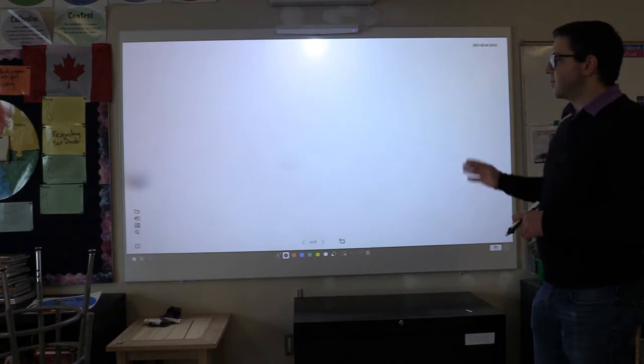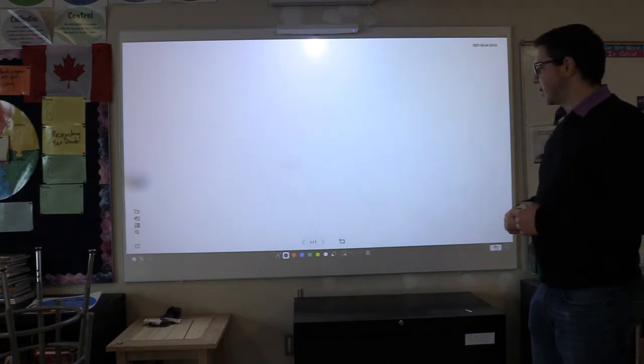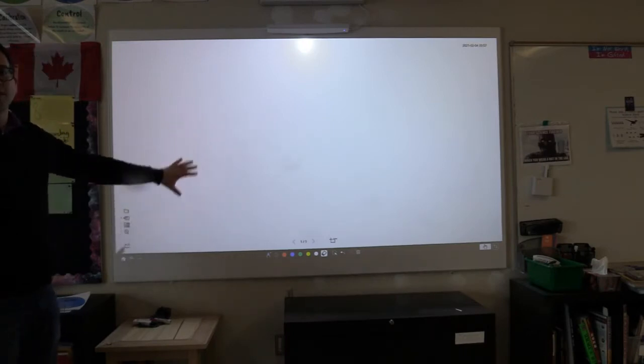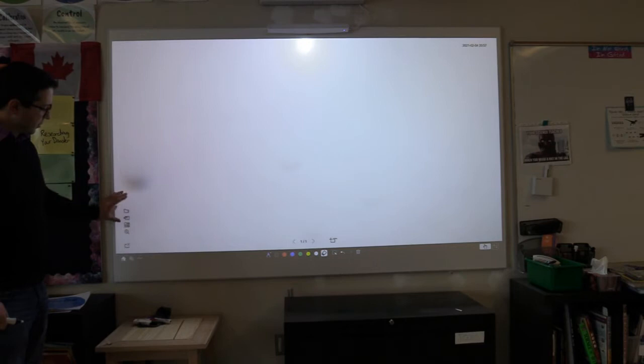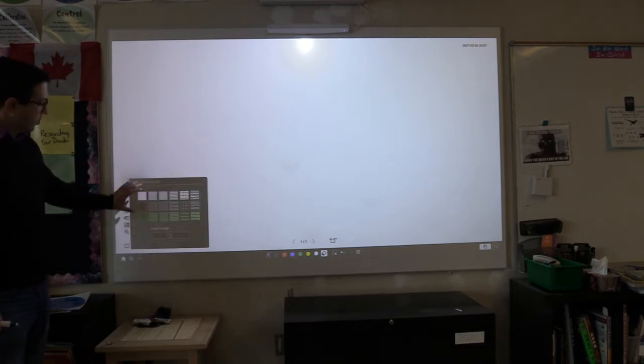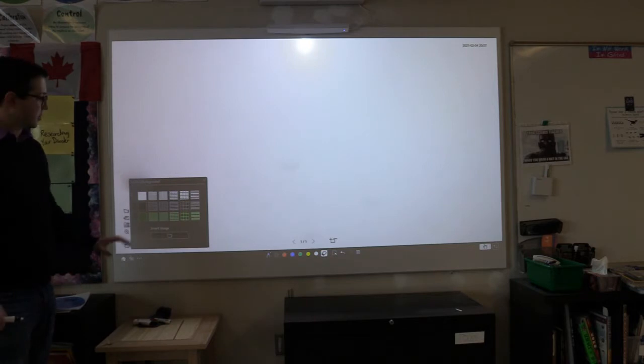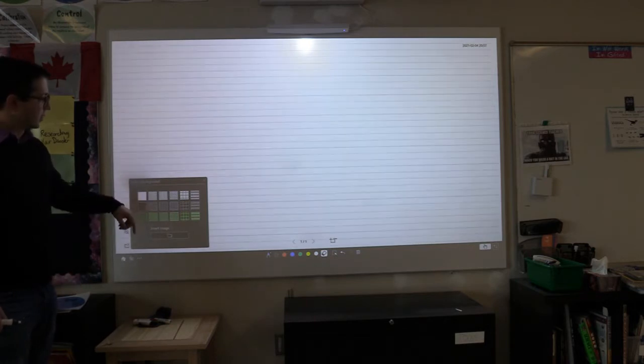I can now interact with it with a number of different pen tools and so on. Now that we're in whiteboard mode, on the left hand side we've got some different ways that we can interact with the board. These four squares here will pull up a background image so we can choose to have lines or grids.